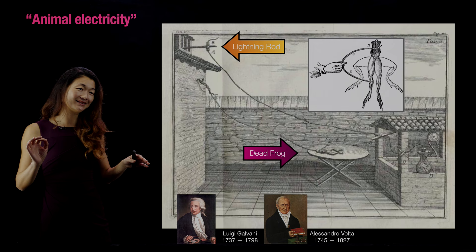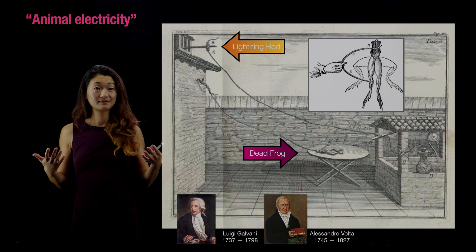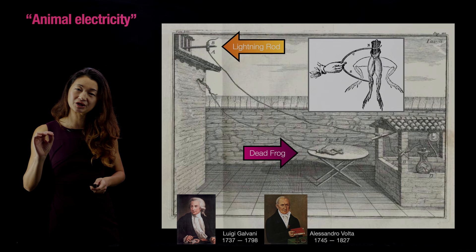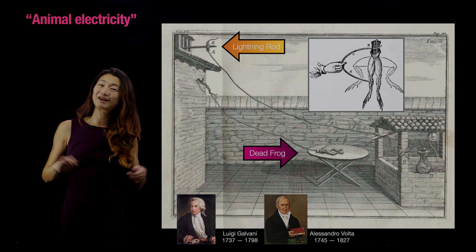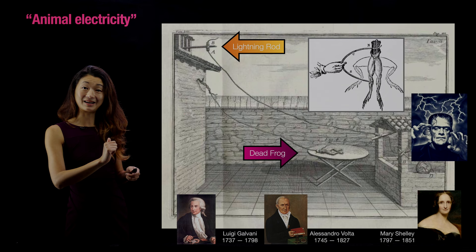Sounds somewhat obvious to us now, but back then this was revolutionary — the fact that you can actually unify our understanding of biology and movement with the same electricity whose laws were being described at the same time in terms of studies of batteries, wires, and capacitors. This was such a revolutionary idea at the time that it really inspired the popular imagination. And this idea — that lightning can reanimate a dead frog — directly inspired Mary Shelley's writing of Frankenstein, where Frankenstein's monster was similarly like the dead frog waiting for that strike of lightning to be reanimated.